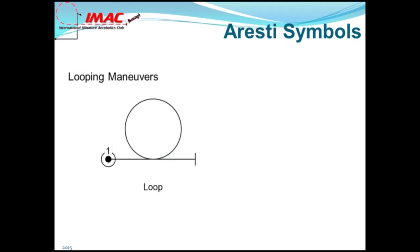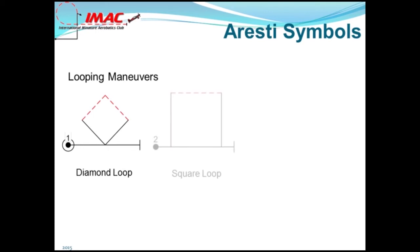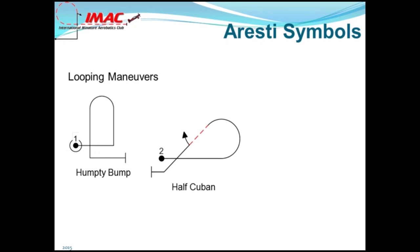This is a symbol for a loop. This is an Immelmann or a half-loop with a half-roll on exit. Diamond loop. Square loop. A goldfish. This is a humpty bump. Half-Cuban. Reverse half-Cuban. Note that the reverse half-Cuban begins on the 45-up line, half-roll to inverted, and then pulls the 5-eighths loop. This is a symbol for a hammerhead or a stall turn. This is a reverse teardrop. Shark tooth.